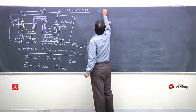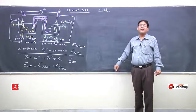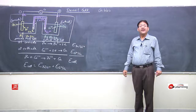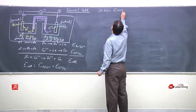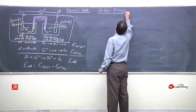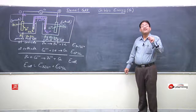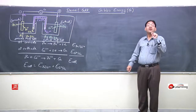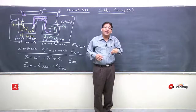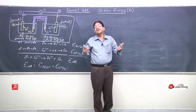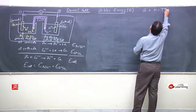Gibbs free energy, on the recommendation of IUPAC, is denoted by G and is defined as the energy available with the system in order to do useful work. It is expressed as H minus TS.